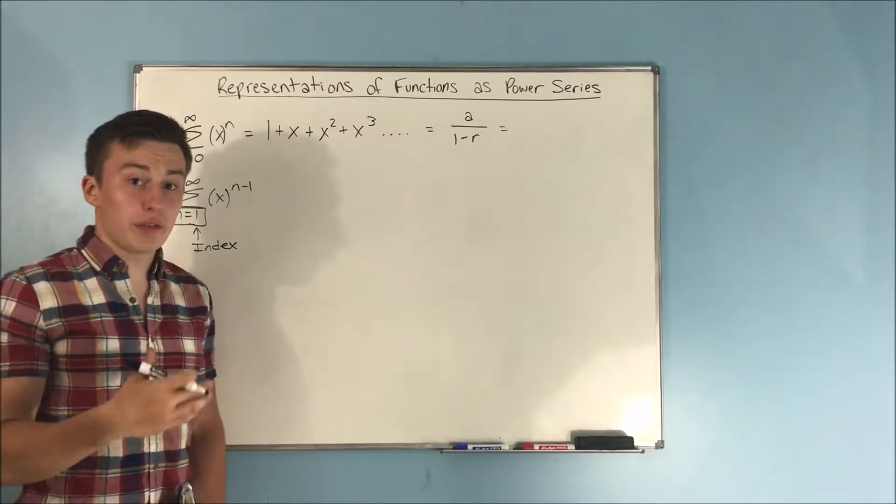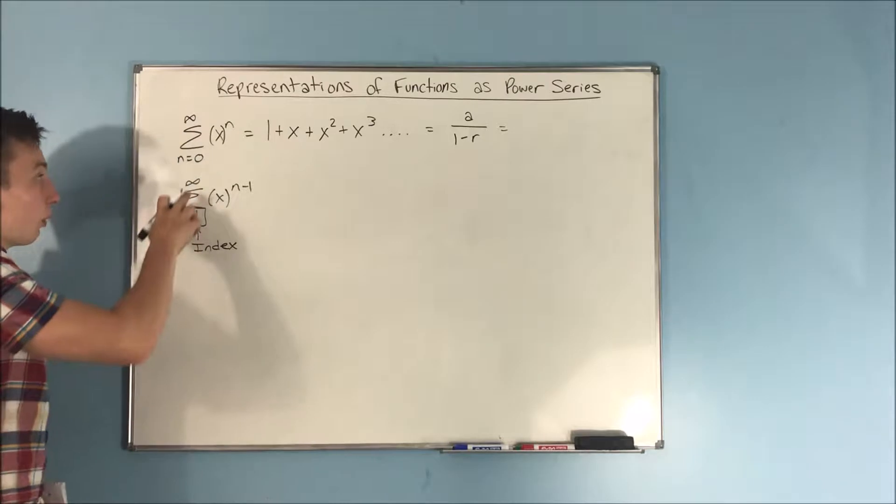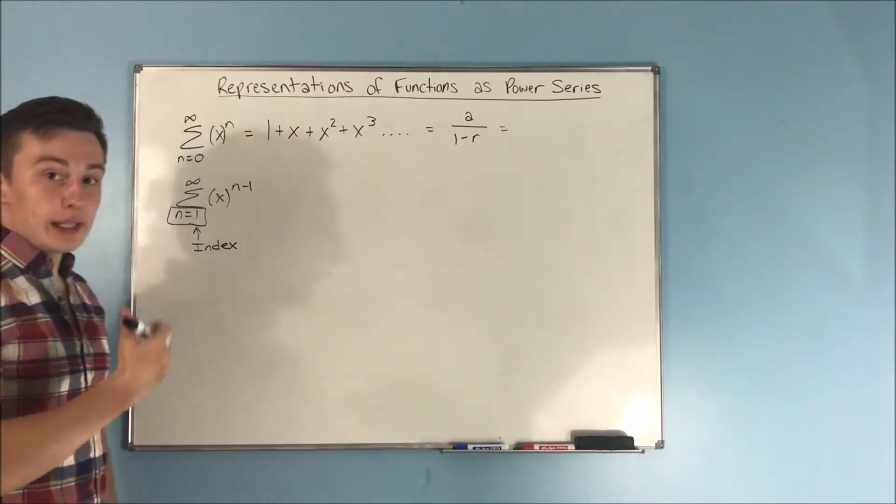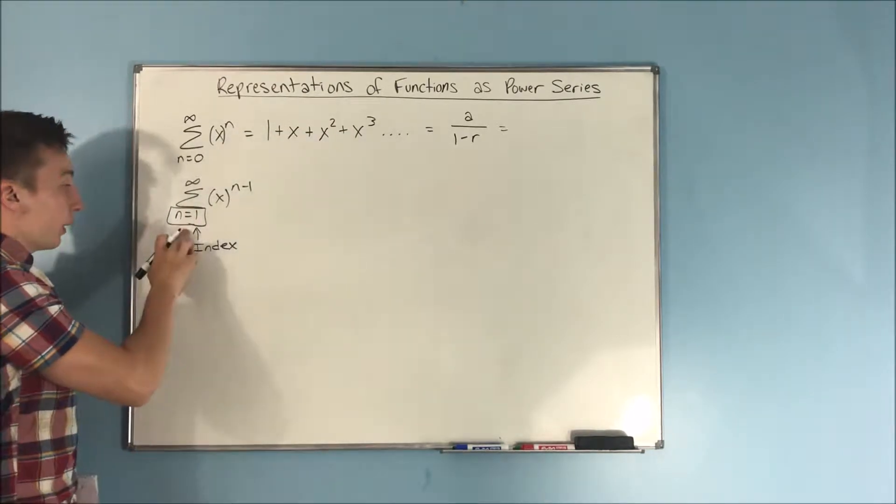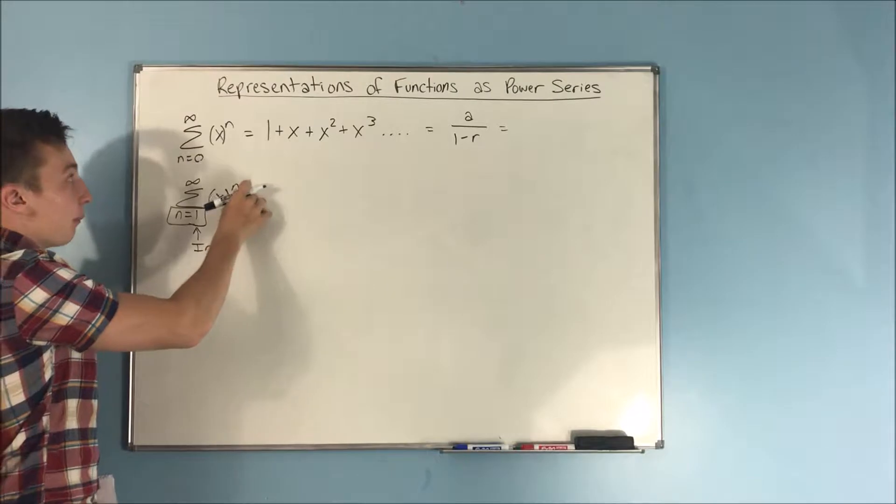So here's something that I'm going to explain in a later video, but I'll kind of put the idea in your head for now. When you lower the index by 1, you have to increase n by 1. So you see here we lowered it from 1 to 0, and here we have to increase n by 1.